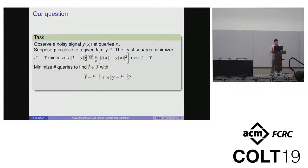The task is to minimize the number of queries to find F tilde that is close to F star. In this work, we're interested in the agnostic learning setting, where the distance between F tilde and F star is at most epsilon times the L2 loss of the least squares minimizer.